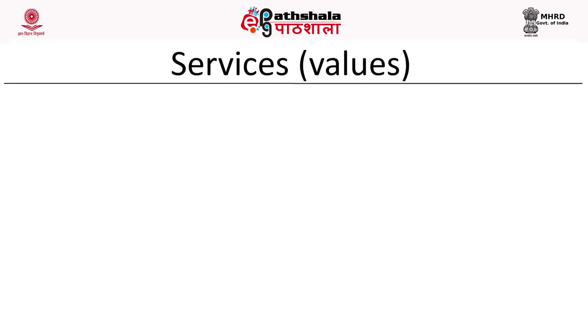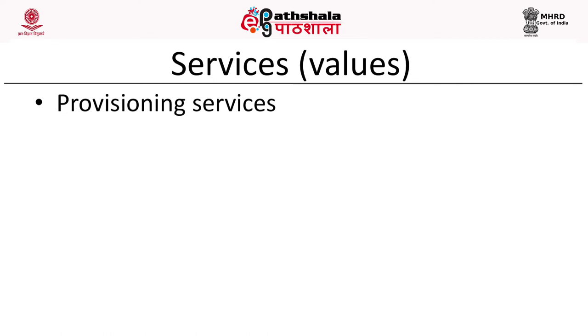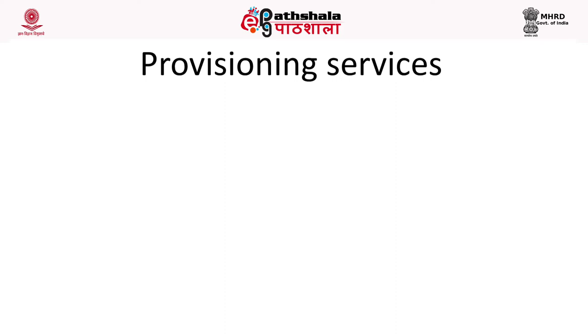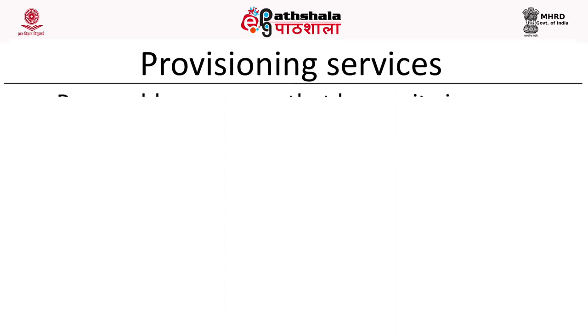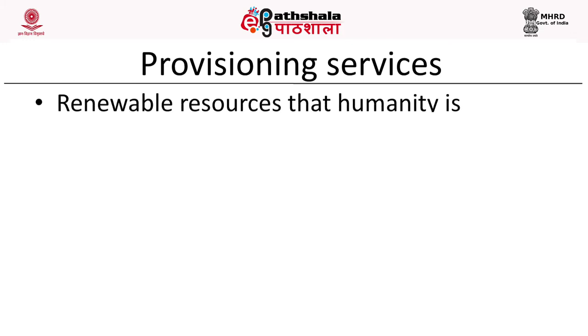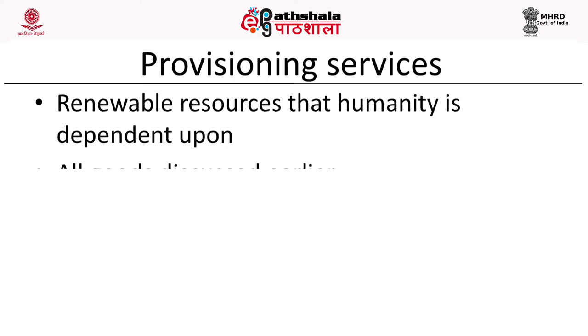There are several values, or services, offered by the world's biodiversity. These can be grouped into four types: provisioning services, supporting services, regulatory services, and cultural services. Provisioning services are renewable resources that humanity depends upon. All goods discussed earlier come under provisional services, as well as the very important process of pollination by insect and bird pollinators. Pollination is of immense use for agriculture — one estimate values it at 14.6 billion US dollars annually worldwide, with almost 99% of pollination done by insects or birds.